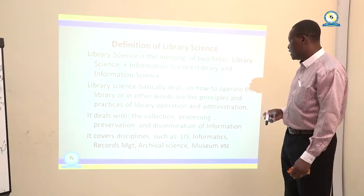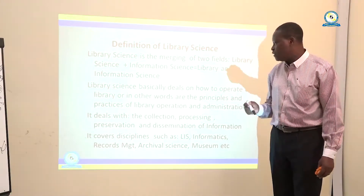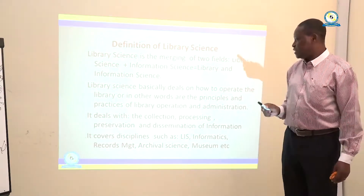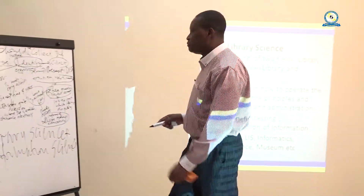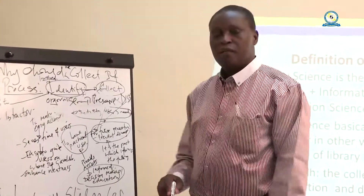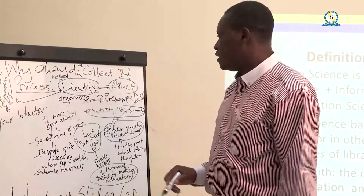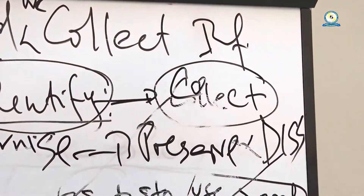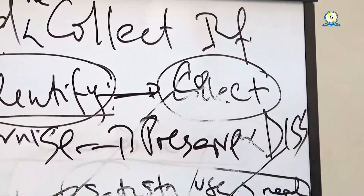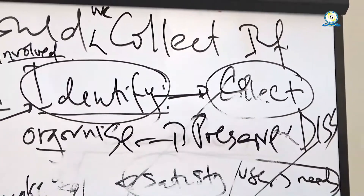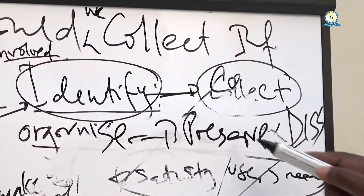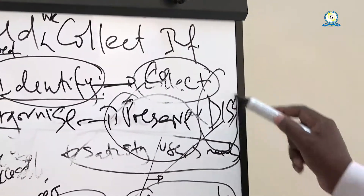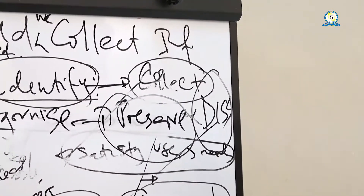In other words, Library Science refers to the principles and practices of library operation and administration. It deals with the collection — to have a library, you need to have a collection. When you have the collection, it needs to be organized. After organizing the information, we have to preserve the information, and lastly, to disseminate the information.